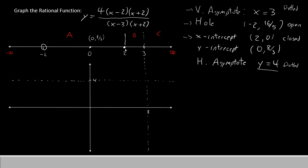I will place the x-intercept on the axis right here at 2. I'll also place the y-intercept over here at 0, 8 thirds. It'll be just a little bit below 3. And I'll also place the hole at negative 2, 16 over 5. So here would be negative 2. 16 over 5 is a little bit more than 3. So I'll place my open circle a little bit above.